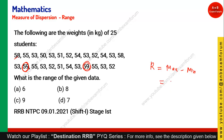We can say 59 is the maximum value in this data set. For the minimum — 55, 53, 50 is the minimum. So 50 is the minimum value. The difference of 59 and 50 is 9, and the range of the given data set is 9. It was asked in NTPC exam in year 2021. The answer for this question is option C.